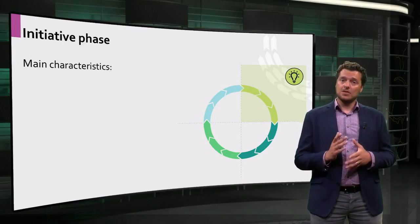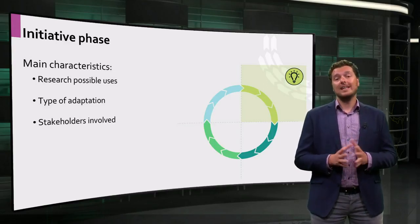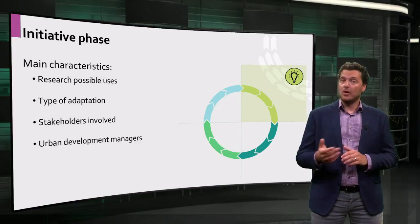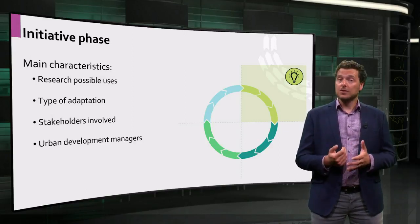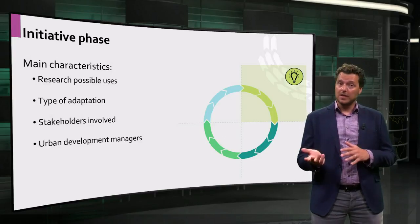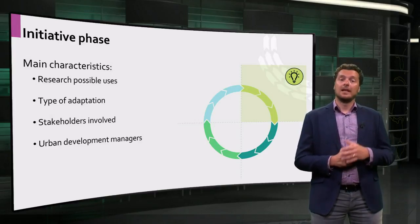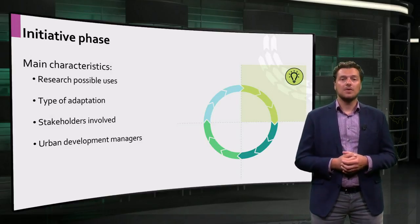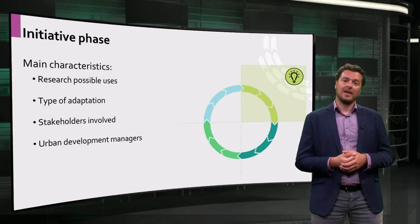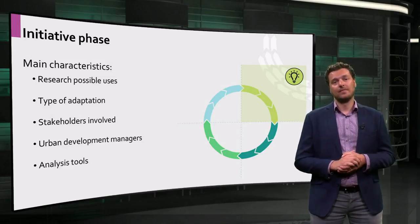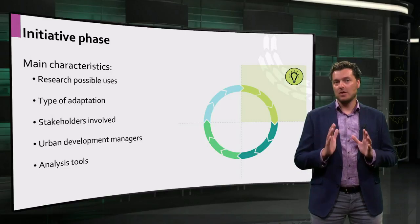In the initiative phase, you decide which uses are possible for your building, what type of changes you are going to make, and who needs to be involved in this adaptation. Urban development management looks beyond the building itself and analyzes real estate market demand and location opportunities. They also look at other types of building functions like housing, offices, retail, and so on. Then they identify the various types of actors like owners, investors, municipalities, real estate developers, and also users that might play a significant role in the adaptation process. So in this phase, it is all about analysis tools. With these tools, managers can determine a suitable function for the building adaptation and who is going to be involved.